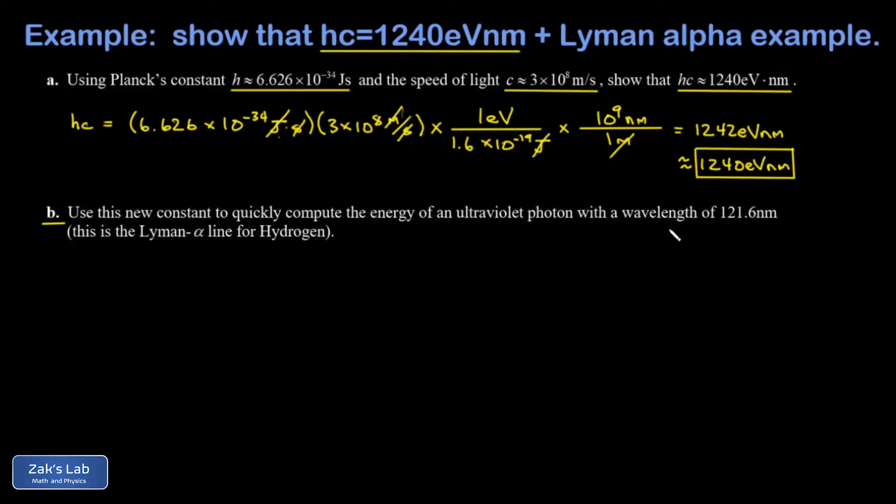I'm told I have an ultraviolet photon with a wavelength of 121.6 nanometers. It's very typical to get wavelengths in nanometers. And this is actually the Lyman-alpha line for hydrogen. In other words, it's caused by the transition from the first excited state down to the ground state for hydrogen. So I'm looking at a photon with a wavelength of 121.6 nanometers.